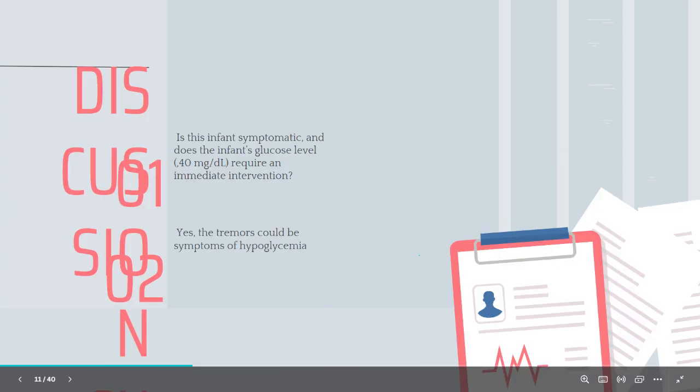Is this infant symptomatic, and does the infant's glucose level, 40 mg per deciliter, require an immediate intervention? Yes. The tremors could be symptoms of hypoglycemia. Because symptoms of neonatal hypoglycemia are nonspecific, they often occur in newborns who are normoglycemic and have other problems. Jitteriness is just as likely among normoglycemic infants and those with a variety of other conditions.